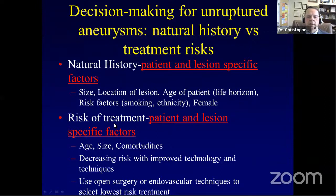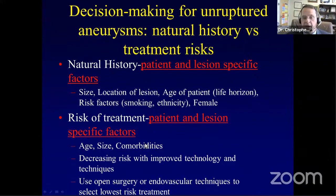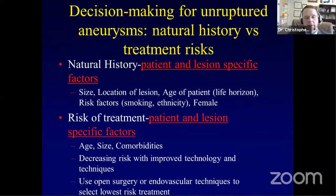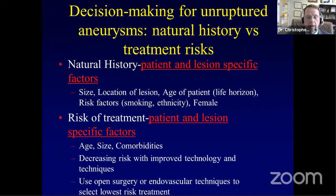When looking at treatment risks, we stratify by patient and lesion-specific factors: age, aneurysm size, and medical comorbidities. A 65-year-old can be physiologically 80 if they smoke three packs a day, have COPD, or other medical issues. The risk of treatment has dropped over the last 20 years, with improved technology and methodology. At our center, we use open surgery or endovascular techniques, selecting the lowest-risk and highest-efficacy treatment.